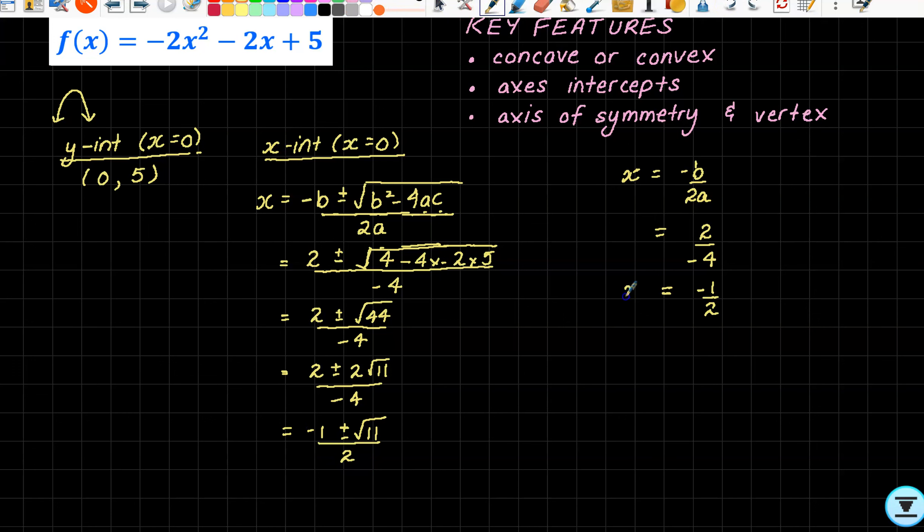To get our y value for our vertex, we're saying that this is x = -1/2. How do we get our y value? Well, we pop it back into our equation. So we want to say y = -2(-1/2)² - 2(-1/2) + 5.